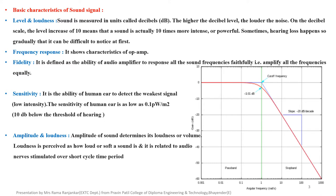Sensitivity: it is the ability of the human ear to detect the weakest signal, that is, a low intensity signal. The sensitivity of the human ear is as low as 0.1 power watt per meter square. Amplitude and loudness: the amplitude of sound determines the loudness or volume, and loudness is perceived as how loud or soft a sound is, related to the audio stimulus over a short time period.